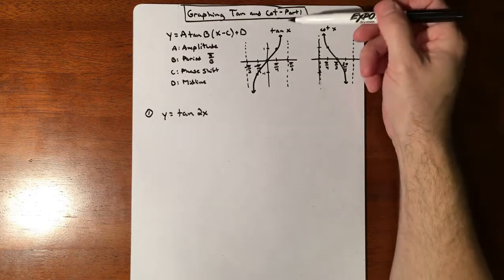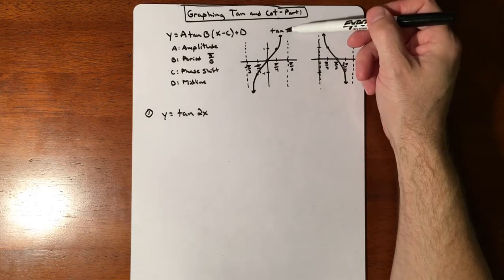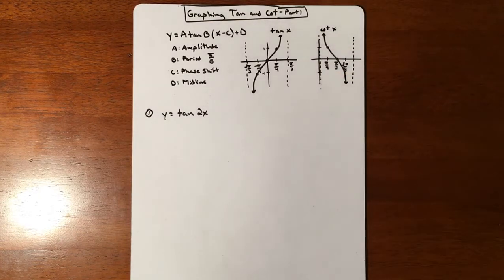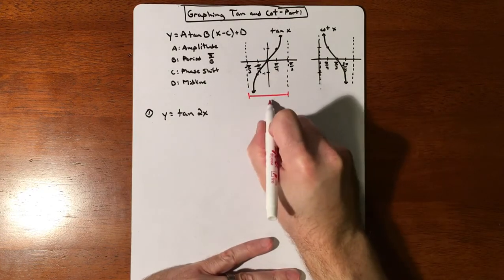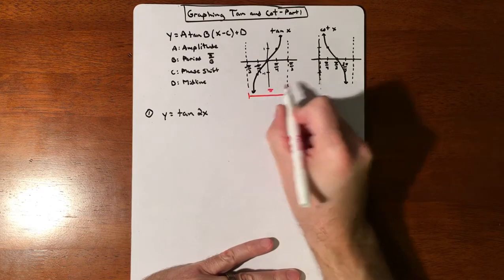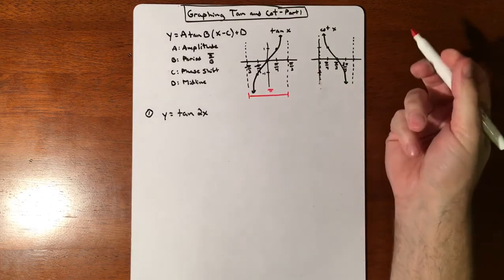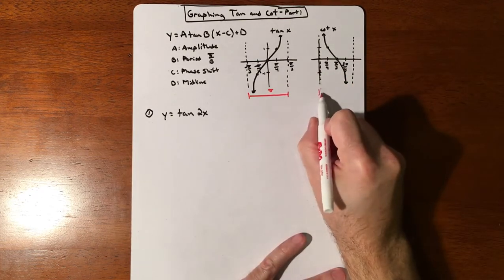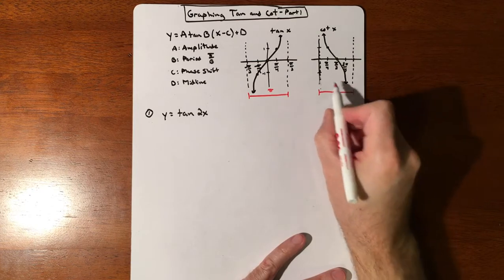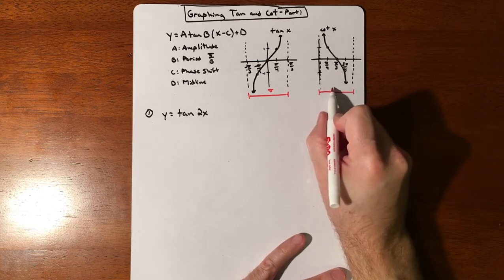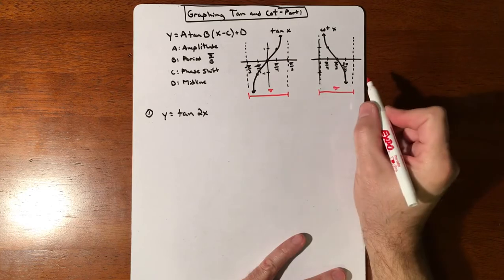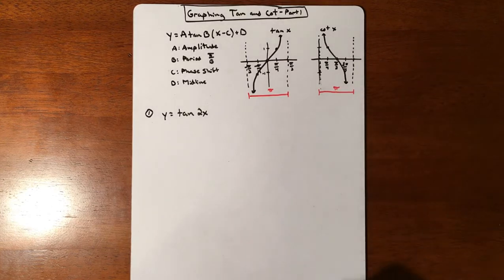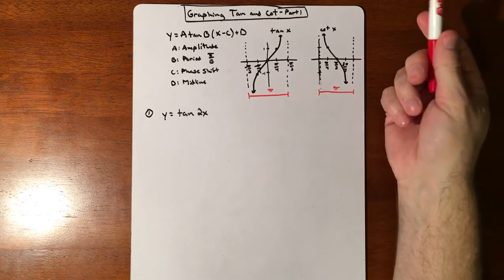The graph is very, very different. The period of tangent is different — one full cycle from here to here is pi instead of 2pi. Same thing with cotangent: one full cycle from asymptote to asymptote is pi. So it repeats itself more frequently than sines and cosines.